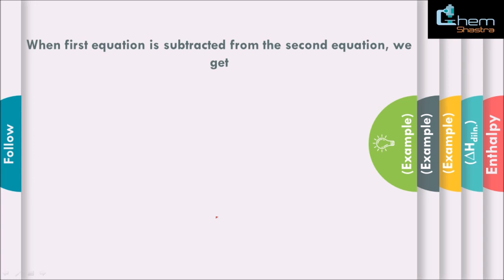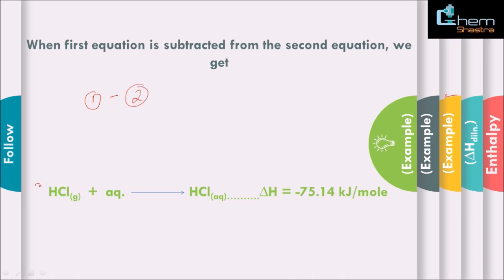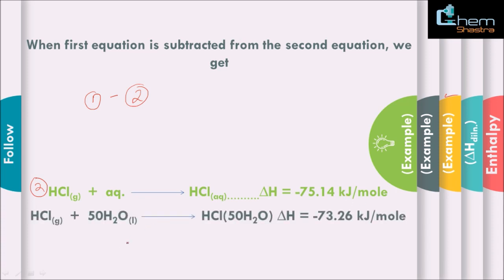Now, if we combine both equations — both statements — and subtract the first equation from the second expression, we can find the enthalpy of dilution mathematically. So we are doing 2 minus 1. The first expression: HCl(g) in 50 moles of water gives delta H. The second expression: HCl(g) plus aqueous excess of water gives HCl(aq), delta H = minus 75.14 kJ per mole. This is what enthalpy of dilution is giving us.